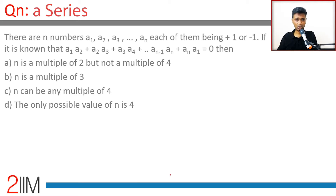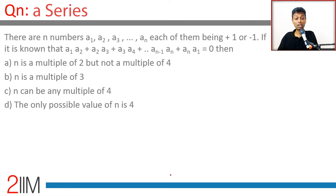There are n numbers a1, a2, a3, all the way to an, each of them being +1 or -1. It is known that a1·a2 + a2·a3 + a3·a4 + ... + a(n-1)·an + an·a1 = 0. Each of these products has to be either +1 or -1. Adding +1s and -1s to get 0 means there should be an equal number of each, so there should be an even number of terms.